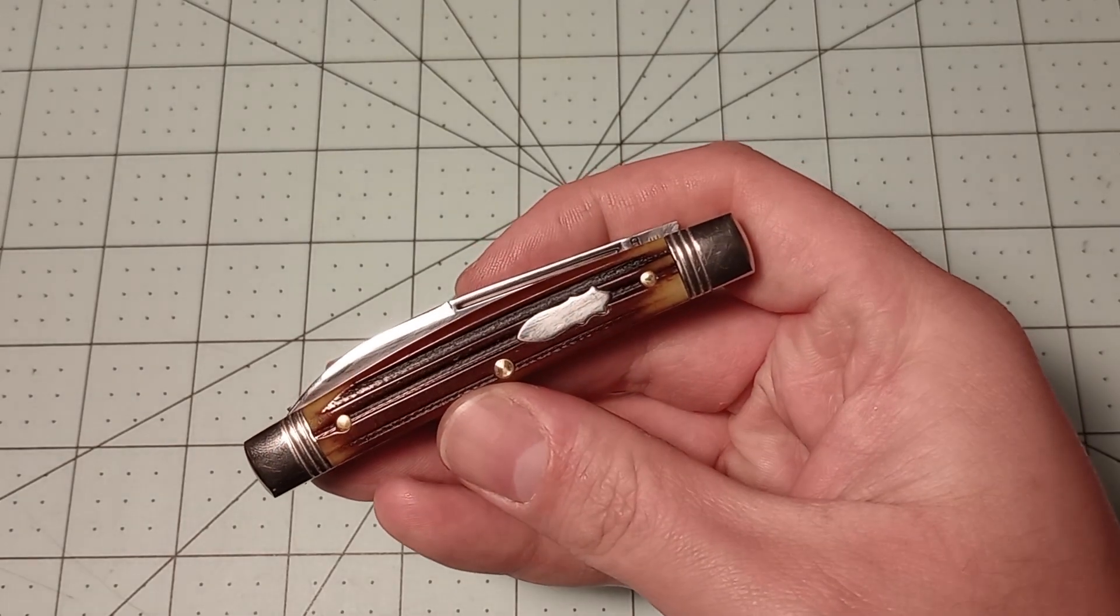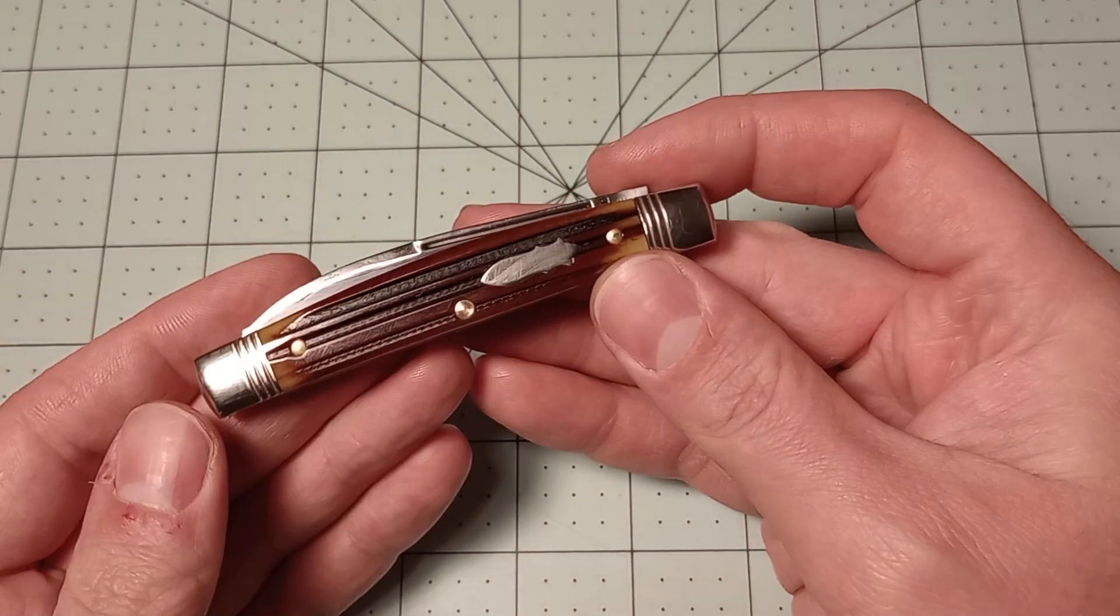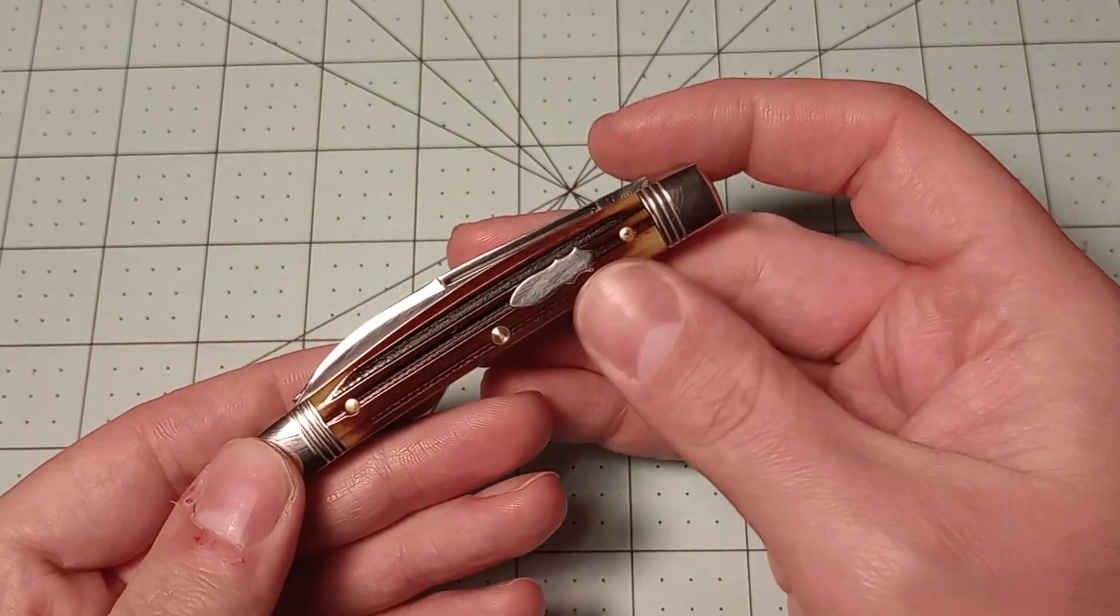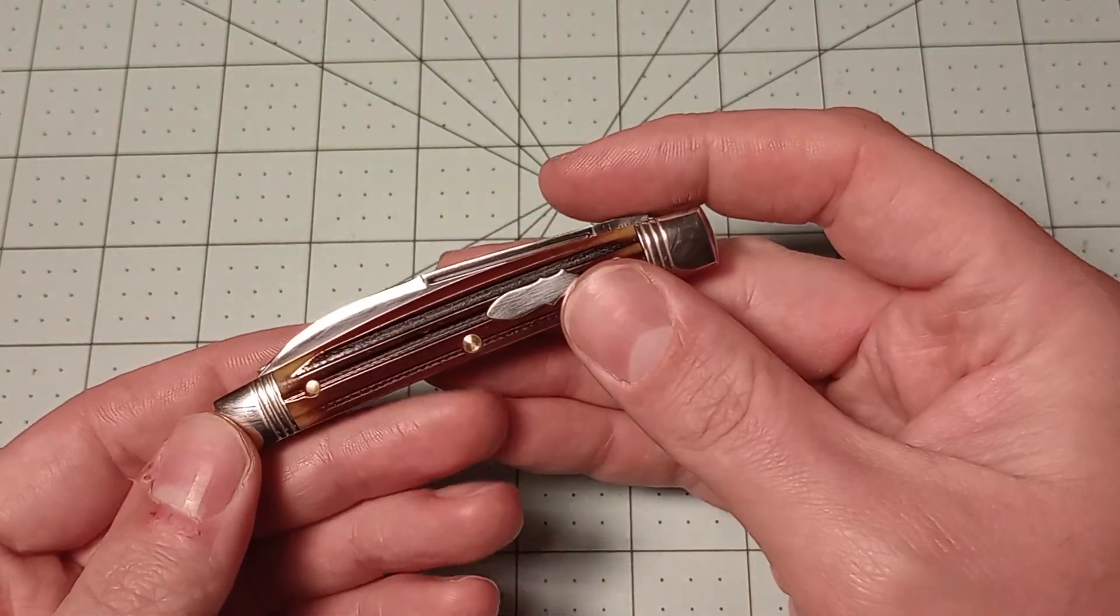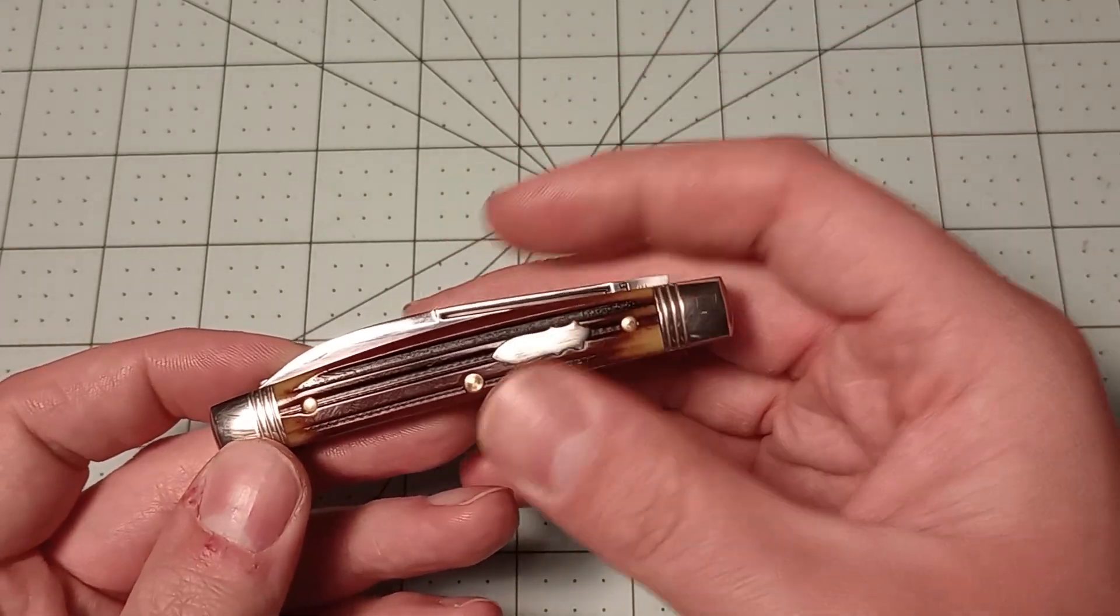I just know that they for sure will not warranty the knife. So you're kind of taking that into your own hands. But I've never had anything that needed to be warrantied on a Great Eastern Cutlery knife anyway. It seems like their quality control is usually pretty good.